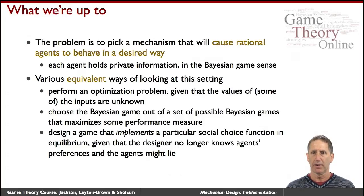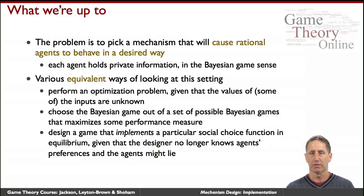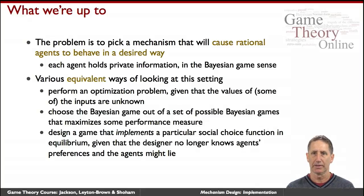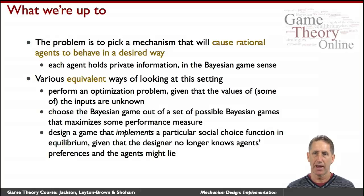How do you specify the mechanism? The intuition is that we want the agents to behave a certain way — we would like to reach a certain social choice outcome. For example, we might want a socially optimal, Pareto-efficient outcome, or in an auction setting, to maximize revenue — and we want to do that without control over the Bayesian game setting. The trick is to set up the rules of the game so as to cause agents to behave the way we want, even though we don't have access to their internal information. We set the rules such that by acting in their own perceived self-interest, they lead to the outcome we desire.